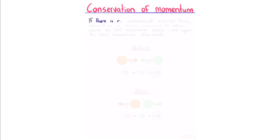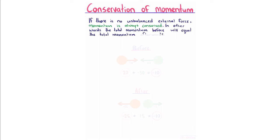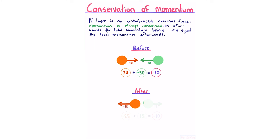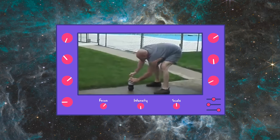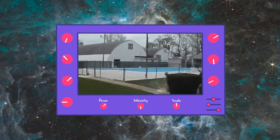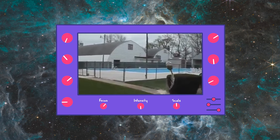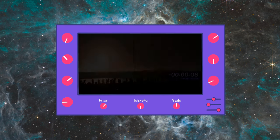Conservation of momentum. If there is no unbalanced external force, momentum is always conserved — total momentum before equals total momentum afterwards. For example, an orange ball with momentum 20 and a green ball with momentum −30 give a total of −10 before collision; after collision, orange has −25 and green has 15, giving −10 again. Here a man mixes Mentos and Coke to make a rocket: the downwards momentum of expelled gas and fluid provides the bottle with an equal and opposite upwards momentum — the same physics that gets us to the moon.